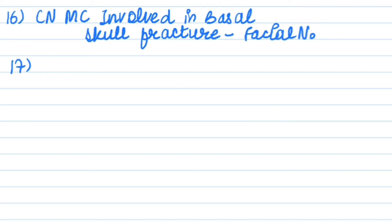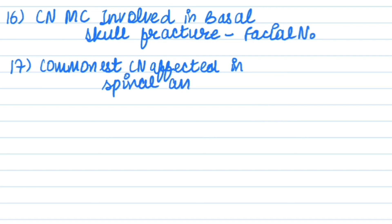Which nerve is most commonly affected in spinal anesthesia? It is abducent nerve, sixth cranial nerve.